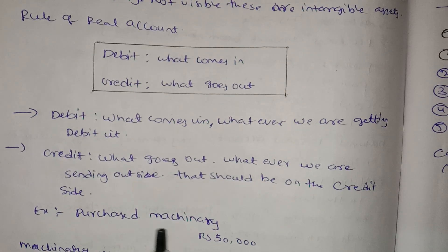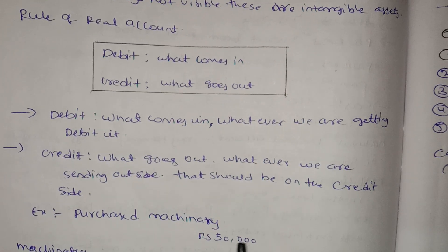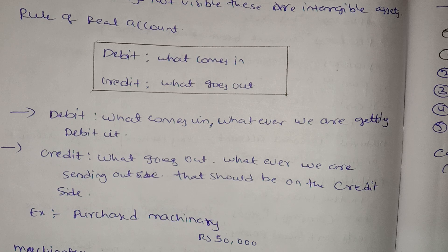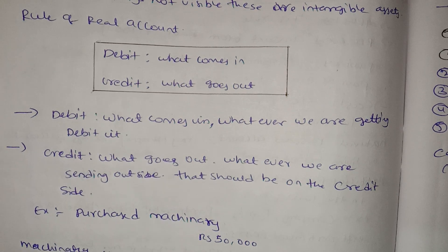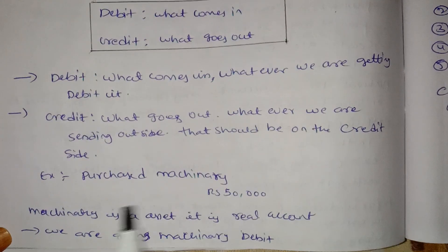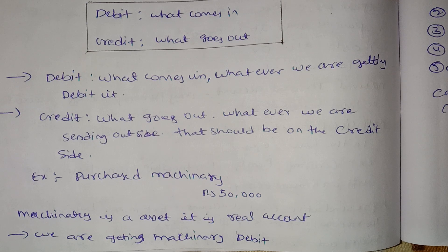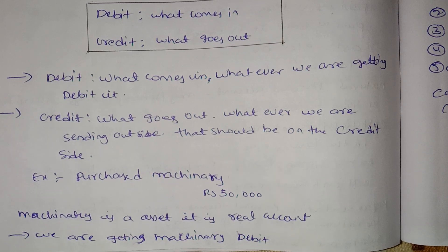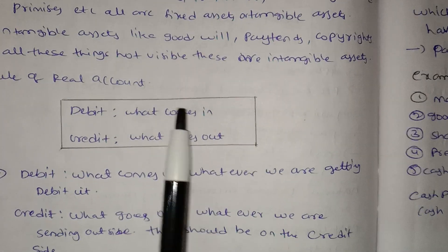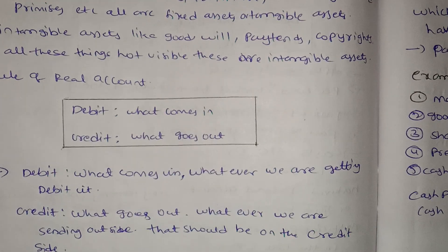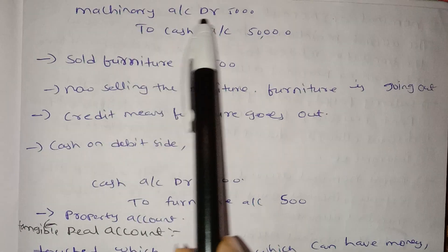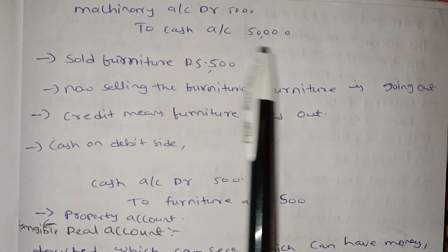Example: Machinery purchased for 50,000. Machinery is an asset, so it is a real account. We are getting machinery — what comes in is debited. So machinery account is debited. Cash account is credited for 5,000.